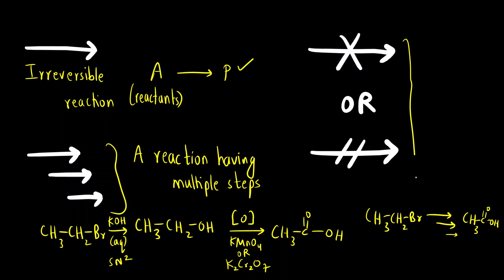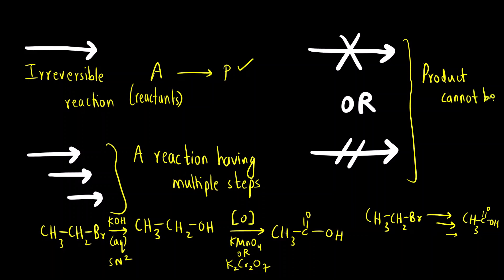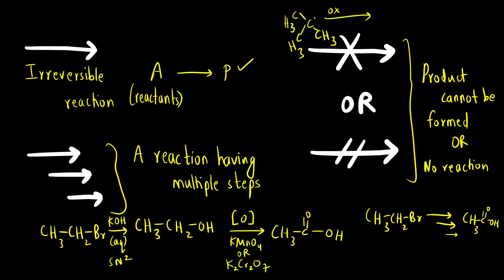An arrow with a cross or double dash means the product cannot be formed — no reaction occurs. For example, if I take tertiary butyl alcohol and attempt oxidation, oxidation of tertiary butyl alcohol is not possible. So we represent this by putting a cross on the arrow, indicating the reaction does not take place. These were three types of arrows.